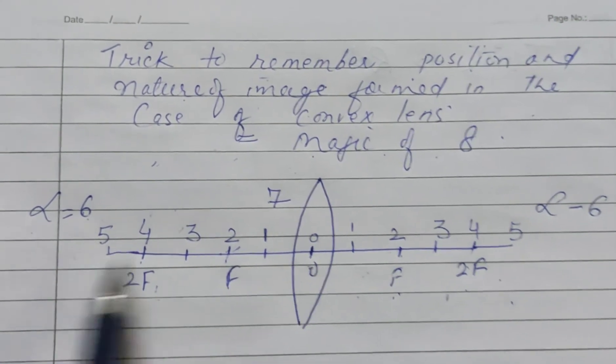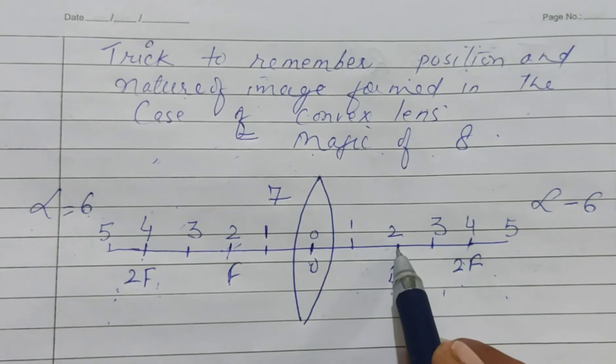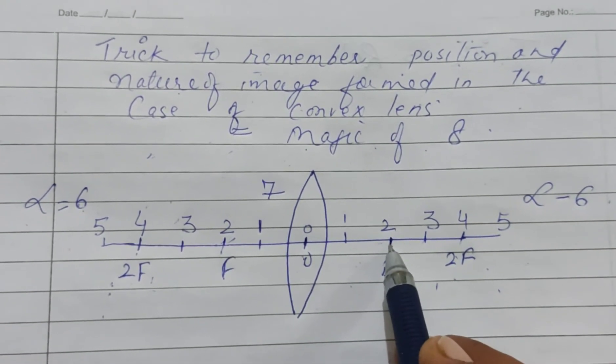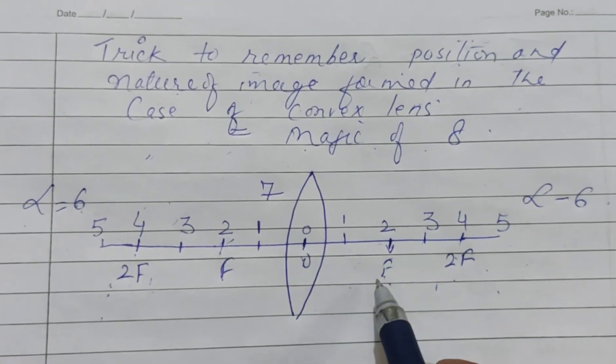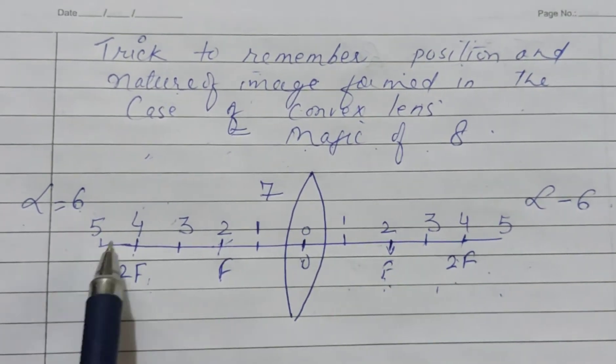That means if the object is at infinity, its image will be formed at focus. You know that the image at the focus will be point size, but it will be real and inverted. It is diminished.